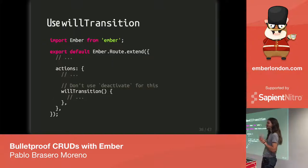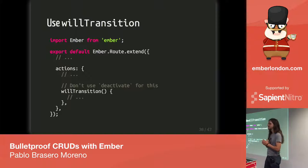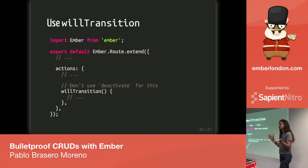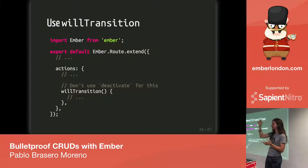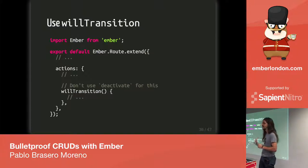I have seen code out there that uses the deactivate hook here, but we should be using the willTransition hook instead. Deactivate doesn't fire if you move from a route to the same route with a different model — which will happen if, for example, you're showing an edit form alongside a list of records and while editing one you click to edit another. You'll be moving from the edit route to the edit route changing the model, but deactivate wouldn't fire. willTransition will fire there and ensure you clean up properly.